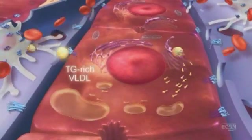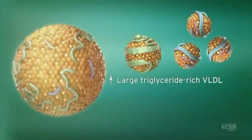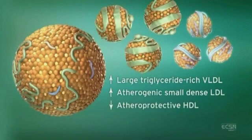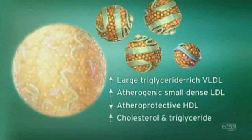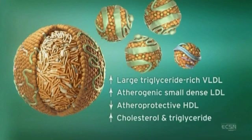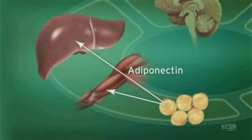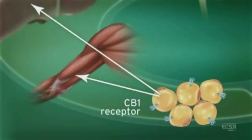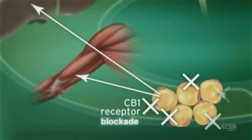Overall increases in cholesterol and triglyceride levels result. Adiponectin, another hormone secreted by adipocytes, regulates lipid and glucose metabolism. Adiponectin is believed to regulate fatty acid oxidation in muscle and liver, thus improving insulin sensitivity. CB1 receptor stimulation in adipocytes reduces adiponectin, while CB1 blockade increases adiponectin synthesis.